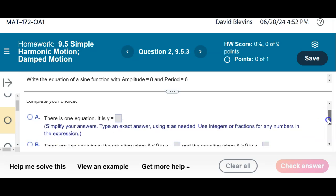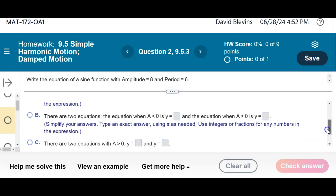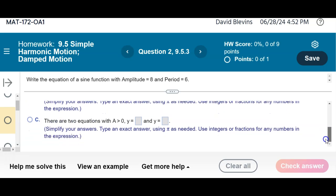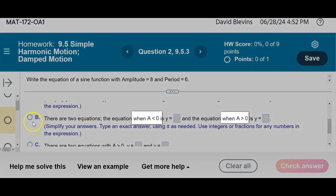When you get down to your answer choices, notice it says there's one equation, there are two equations when A is negative and positive, and then there's two equations both when A is positive. This is the one that's true.